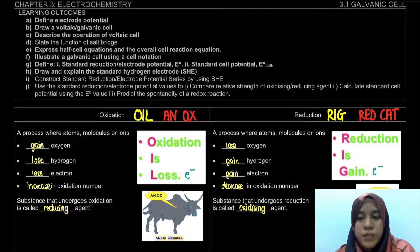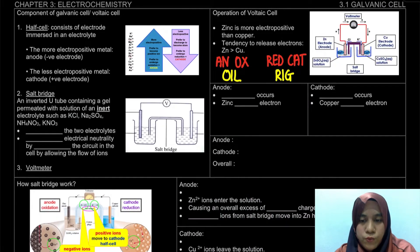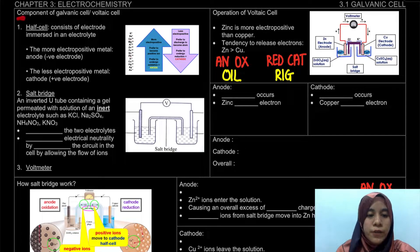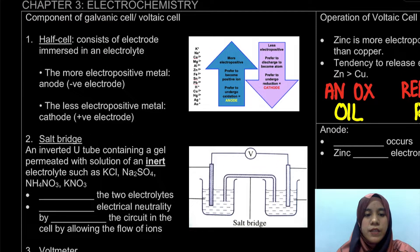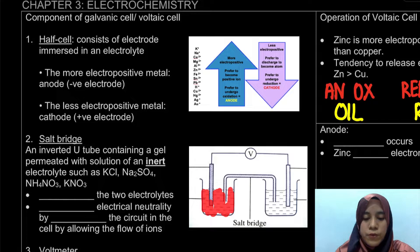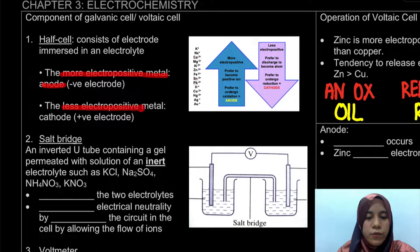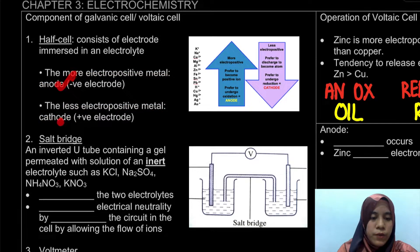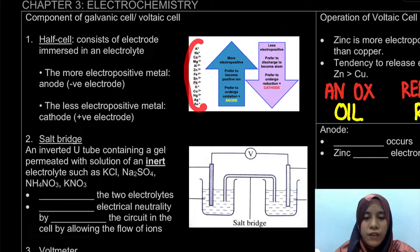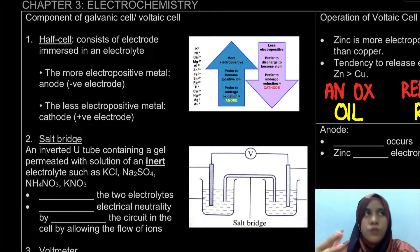That is the introduction for this chapter. Next, we'll look at the operation of the galvanic cell and its components. The first component is the half cell, which consists of an electrode immersed in an electrolyte — an aqueous solution with a solid electrode. The more electropositive metal will be the anode and the less electropositive metal will be the cathode, giving us two half cells. For this matriculation syllabus, we can determine the anode and cathode based on the E-cell value.